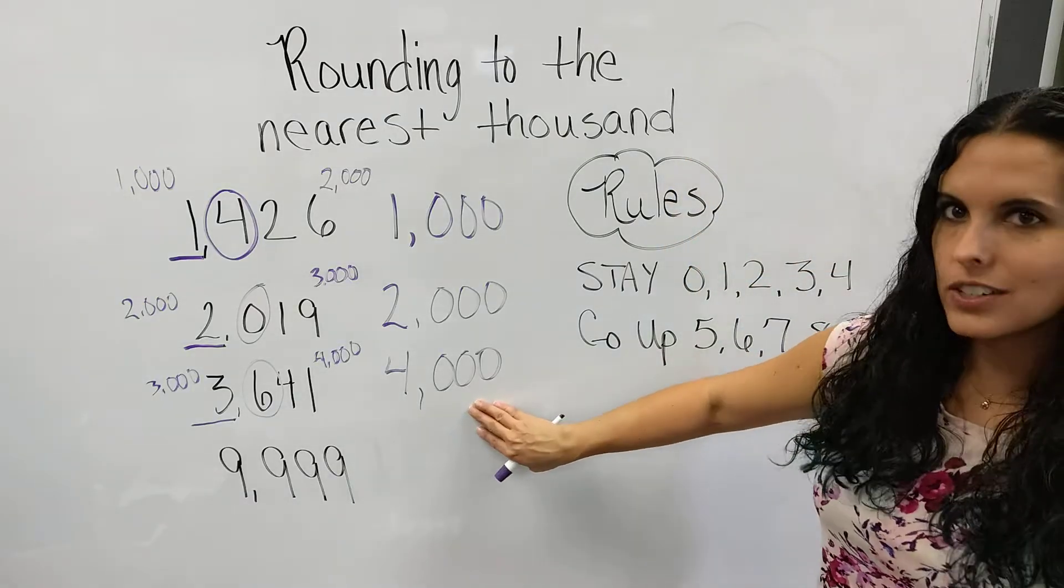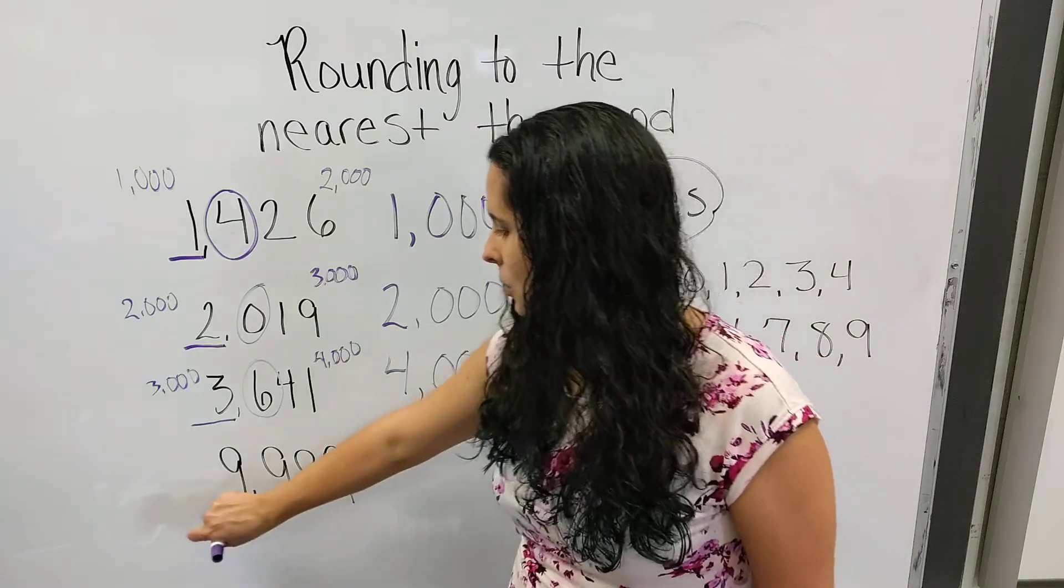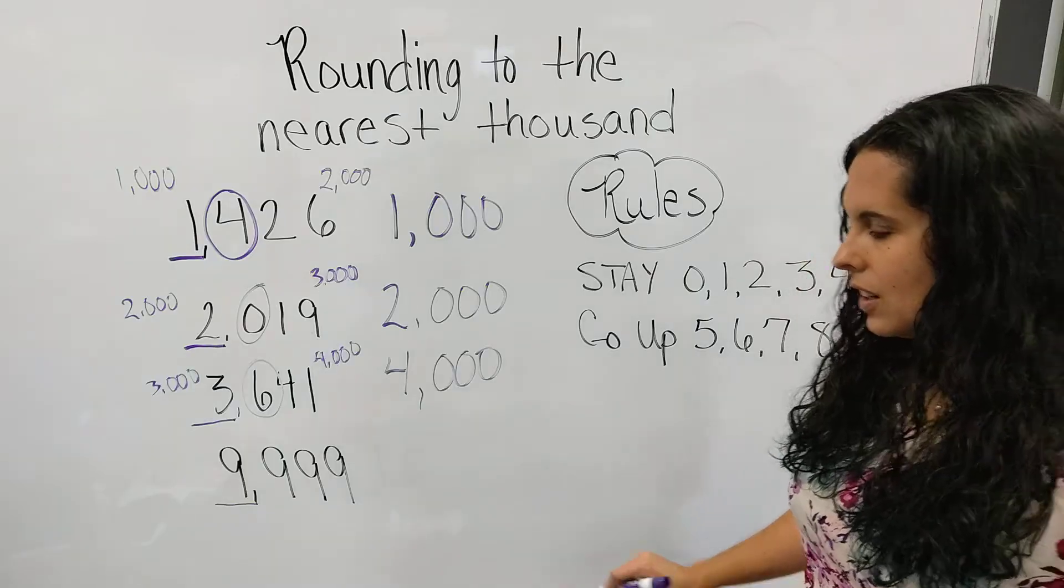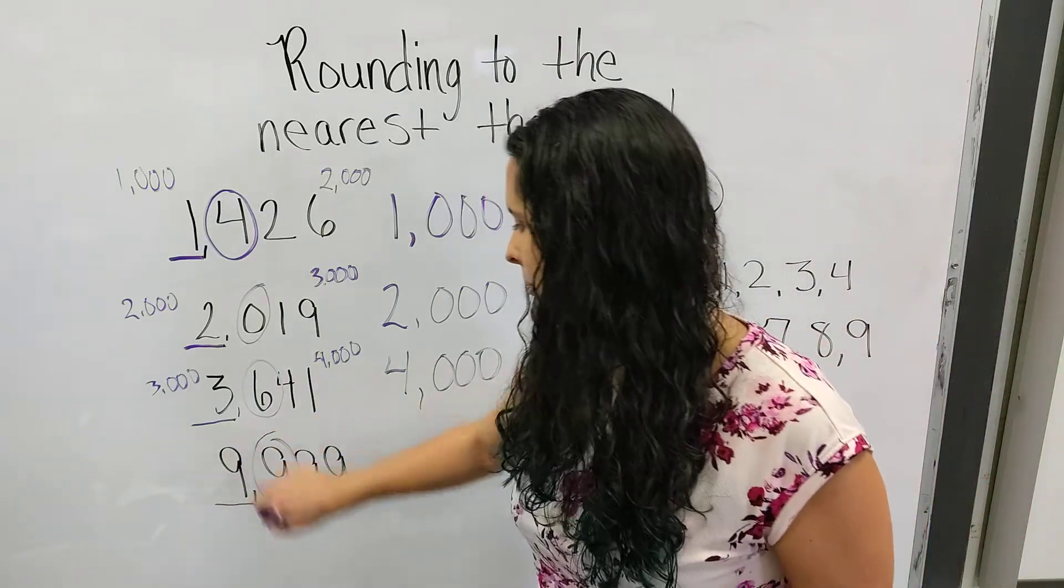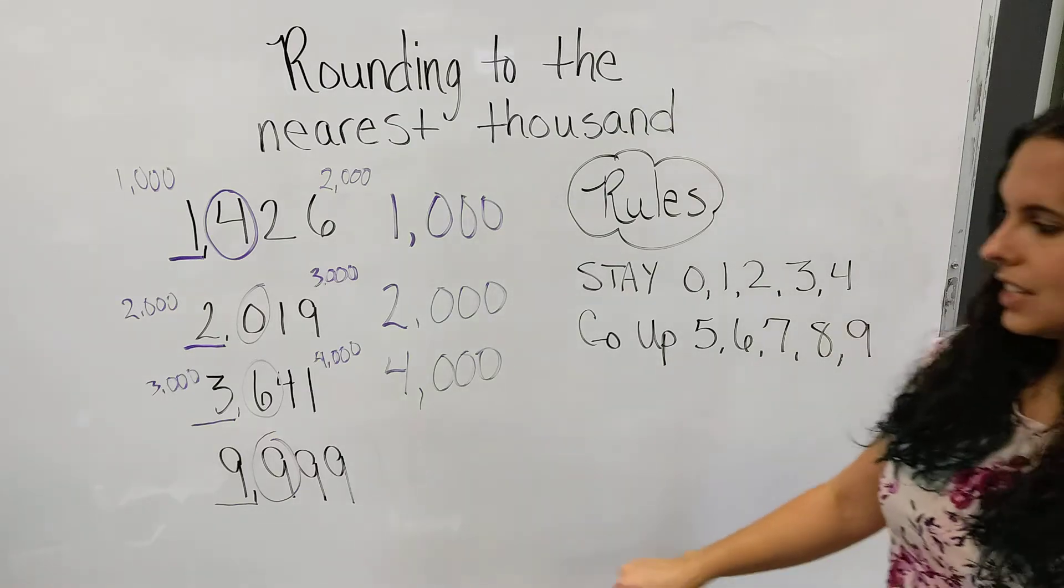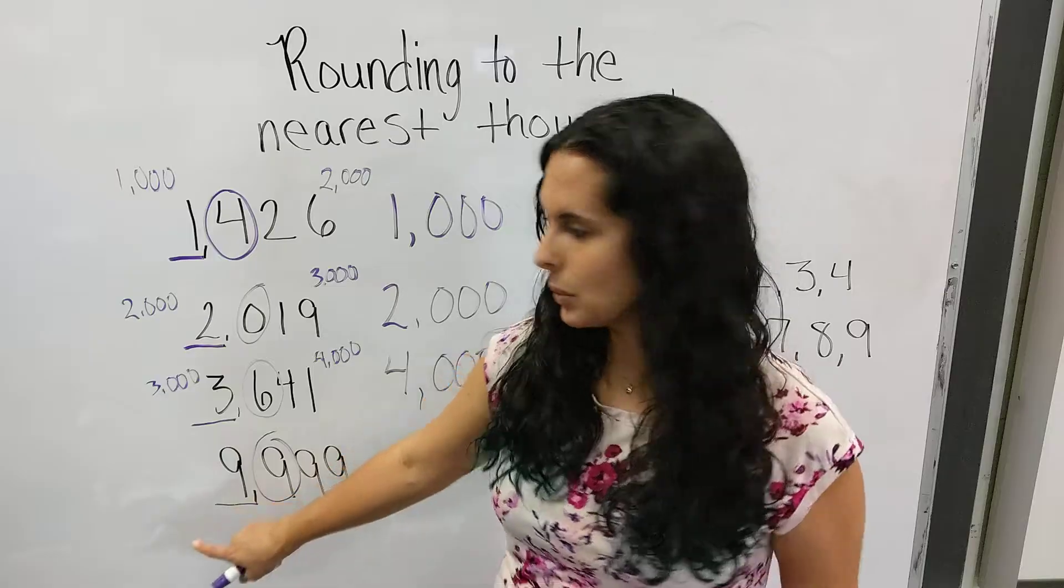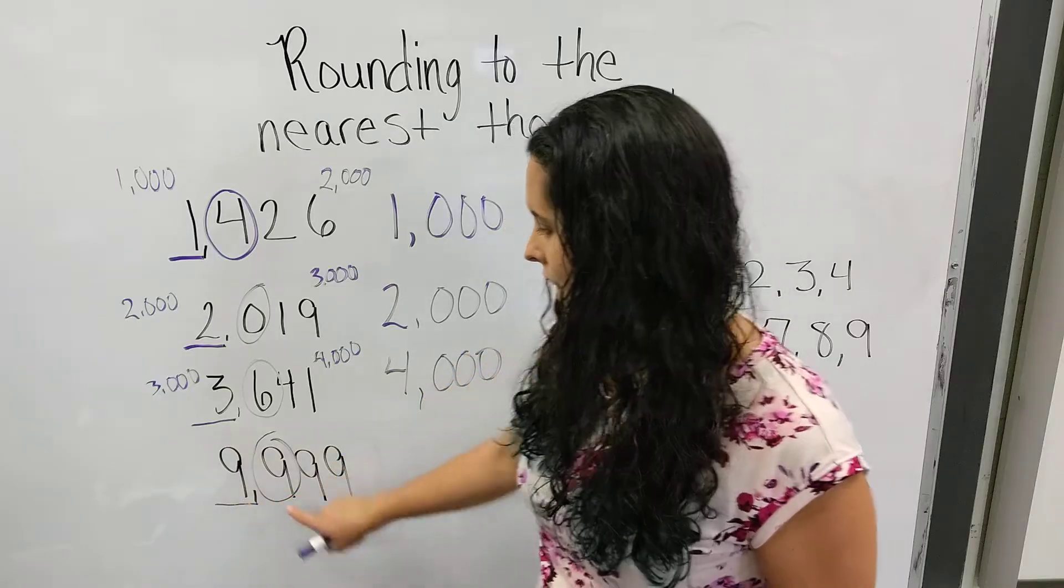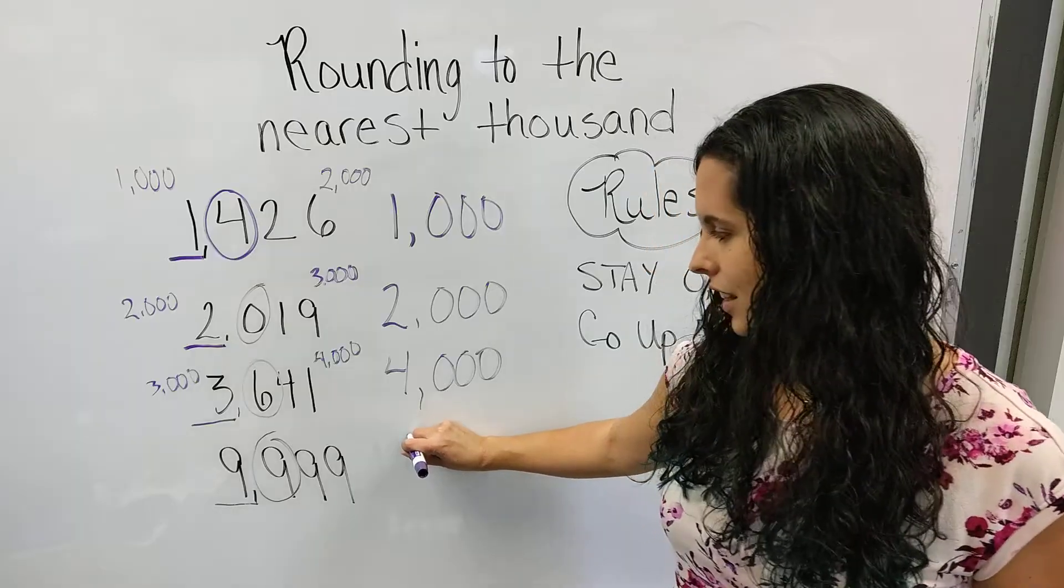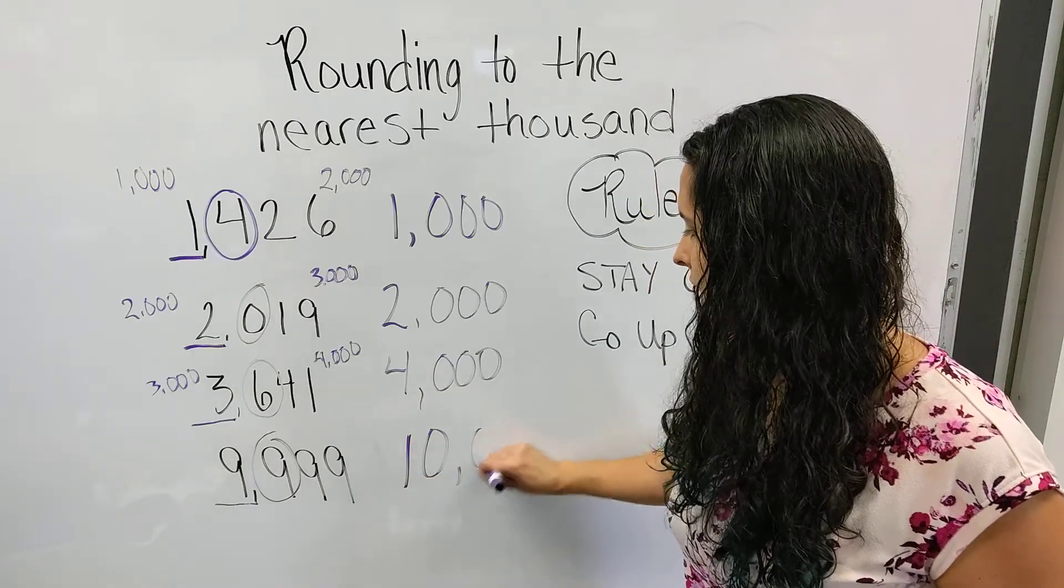Our last number is a tricky one: 9,999. We want to round to the thousands place, so we underline that one. Circle your bossy number. 9 says go up. It's going to tell this 9 to go up. Your next counting number would be 10. And then these guys would go to zeros. So 9,999 rounds to 10,000.